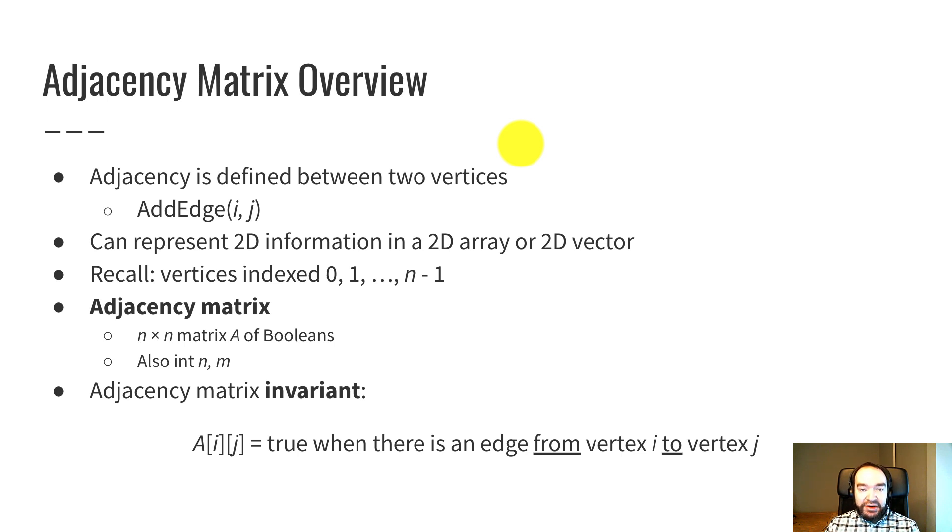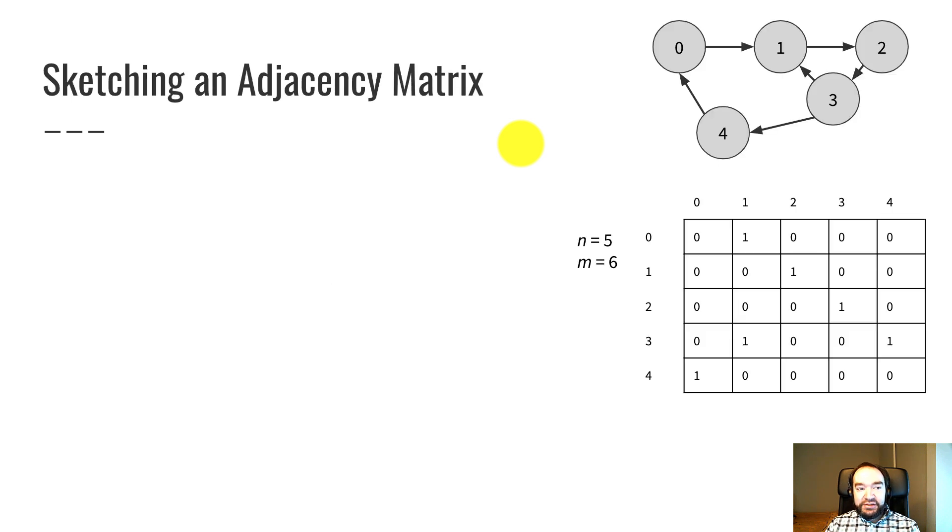i and j are the two indices or two subscripts. And that element is true when there's an edge from i to j. That's how we store the adjacency information. So a[i][j] would be false if there is no edge from vertex i to vertex j.